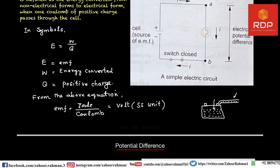EMF is the power given to the electron to move it to the required destination. If there is more power in the battery, the electrons will move fast; if there is less power inside the battery, there is less energy inside the battery. Remember that EMF cannot be used for AC current, just like we use in our homes.